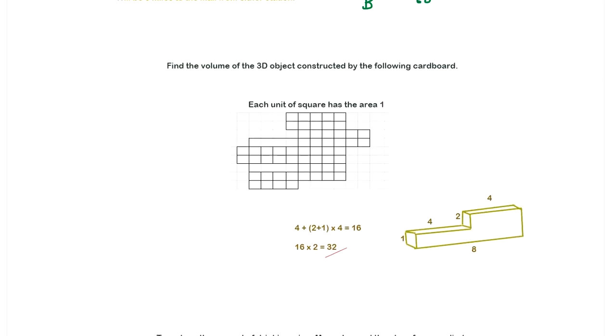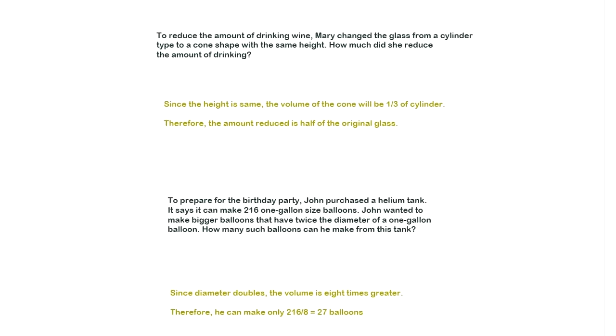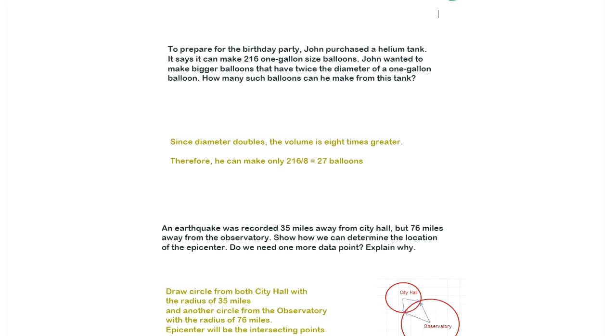Next one, you have to add up each part of the volume. To reduce the amount of drinking wine, maybe we change the glass from the cylinder type to the cone shape. This one we covered once in a previous video. The cylinder volume and the cone, the difference is one third. It's good to remember this. To prepare the birthday party, John purchased the helium tank. This one we covered the same question too.